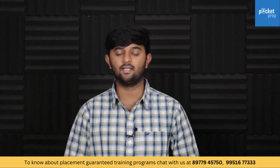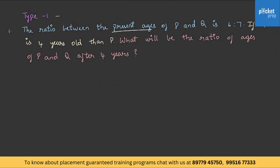We shall discuss a concept in quantitative aptitude, i.e. problems on ages. Let us understand the types of questions which are usually asked in this concept. Type 1: The ratio between the present ages of P and Q is 6 to 7. If Q is 4 years older than P, what will be the ratio of ages of P and Q after 4 years? Let us name this type of question as ratio problems.